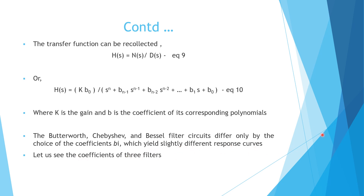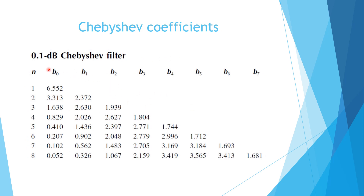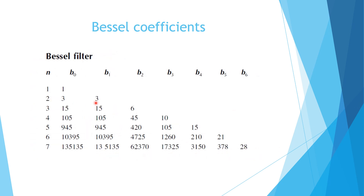For the Butterworth filter, the first-order coefficient b0 = 1, and second-order has b0 and b1 (e.g., 1 and 1.414). The coefficients increase in quantity with each order. Chebyshev coefficients are given for a 0.1 dB passband ripple, and Bessel coefficients are also tabulated. These coefficient tables are used to design filters up to nth order.